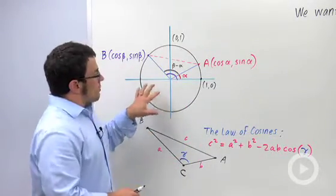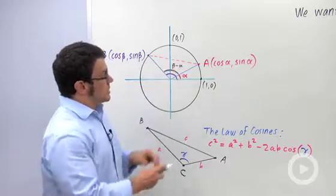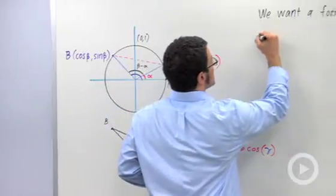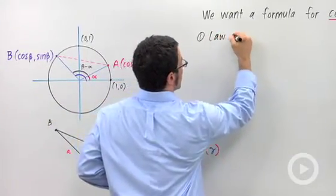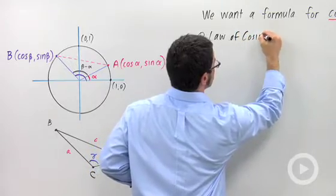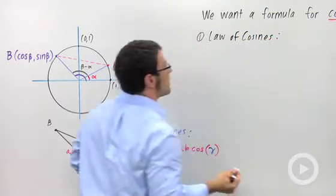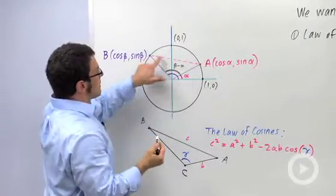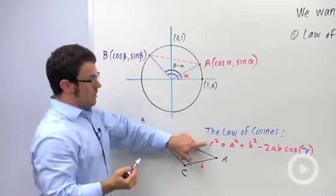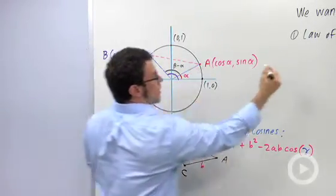Alright, let's start by using the law of cosines on this picture. So first, law of cosines. And let's observe, I want to solve for this length AB squared. That'll be our C squared.